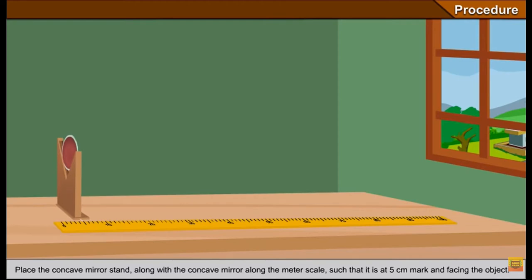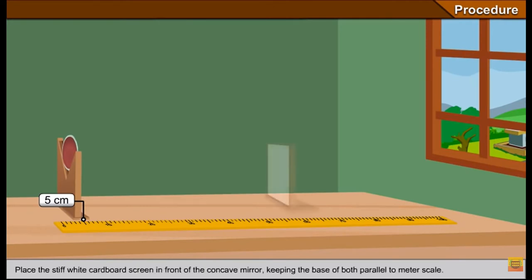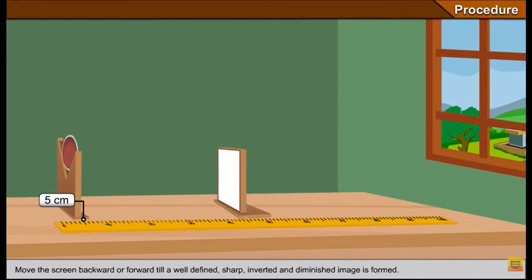And then we will keep a screen close to this mirror. So this is the screen as you can see that is kept close to the mirror. Now the screen will be brought closer to the mirror and we will have to move it forward or we will have to move it backward. So why do we do so?